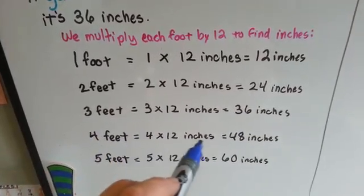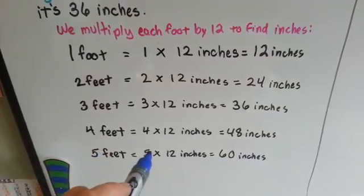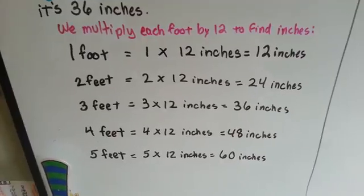Four feet is four times 12 inches, so it's 48 inches. And five feet is the same, five times 12, 60 inches.